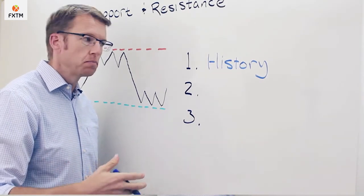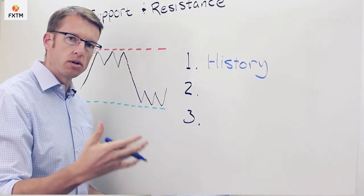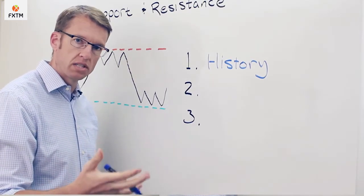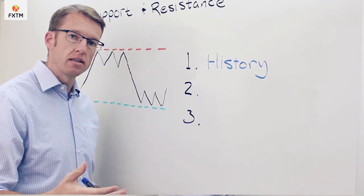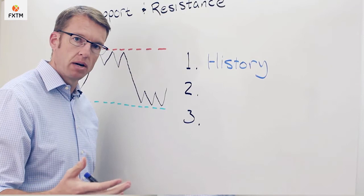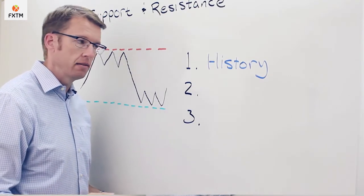The more often that happens, the more likely it is that that level is going to remain a support or resistance level. So something that's been only approached once or twice is relatively weaker than a price level that's been approached several times and the price has not been able to get beyond that level.